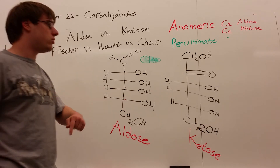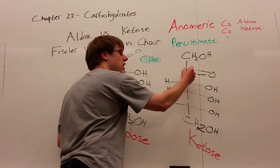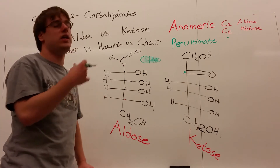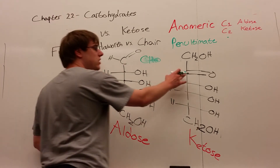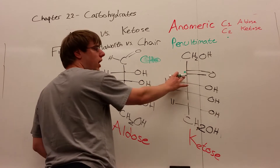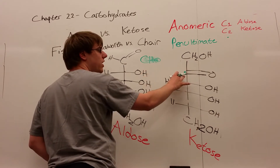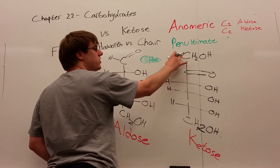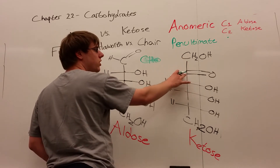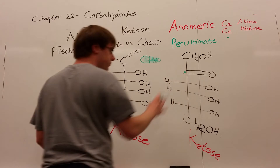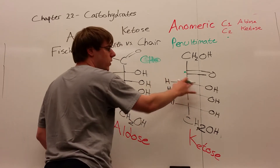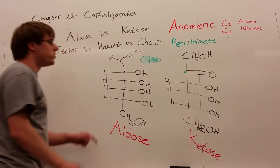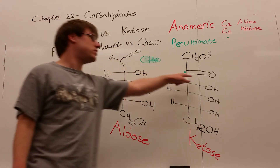In the case of the ketose, the ketose has a ketone on it. That ketone will always be one carbon down from the top of the chain — so if carbon 1 is at the top, carbon 2 is where your ketone would be. Then you have some number of OH-bearing carbons, and a CH2OH on the bottom as well. The key difference is an aldehyde versus a ketone.